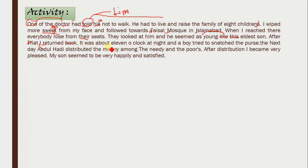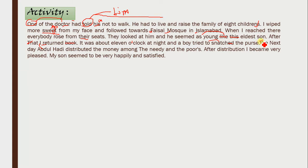'It was about eleven o'clock at night.' An apostrophe is needed in 'o'clock.' Then: 'a boy tried to snatch the purse' — the second form of the verb is not required here; use the infinitive form. The next T — 'The next day' — T would be capitalized because it is the beginning of the sentence.